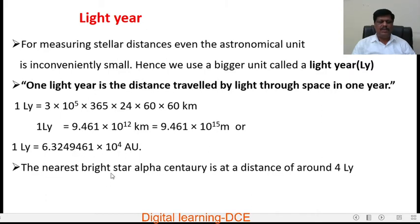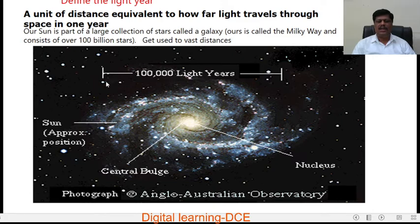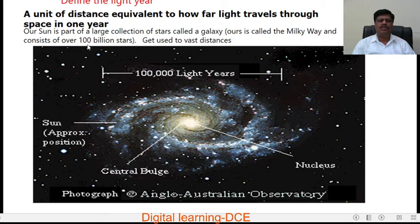The nearest bright star Alpha Centauri is at a distance of around 4 light years. We can also use light years to measure the distance between two stars in our own galaxy. There is about 10⁵ light years distance between stars at opposite ends of our own galaxy, the Milky Way. Our Sun is part of a large collection of stars called a galaxy, and our galaxy consists of over 100 million stars.